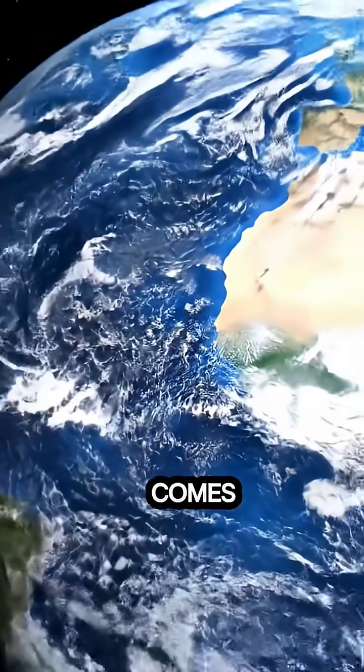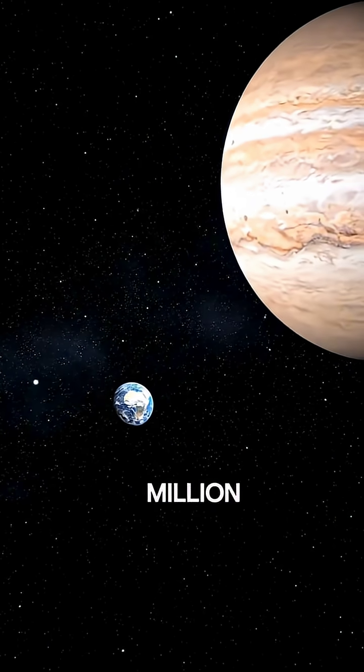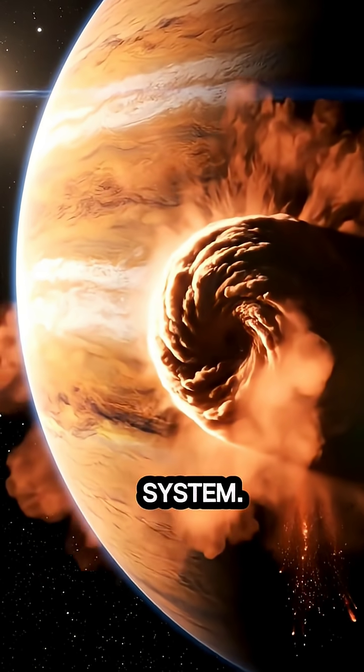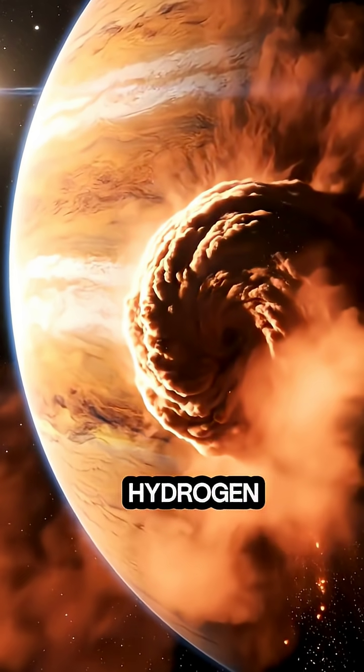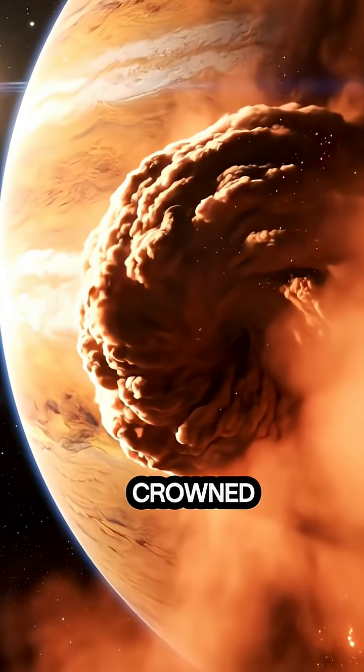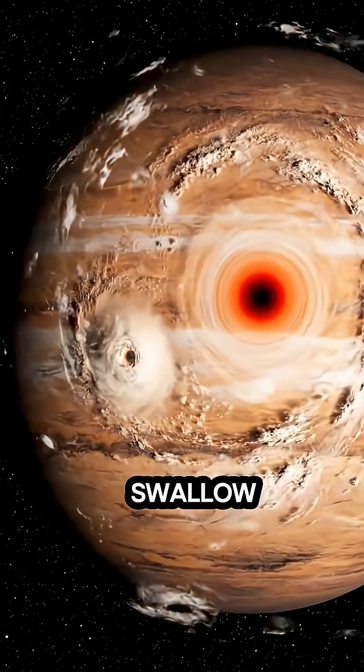Then comes Jupiter, about 628 million kilometers away. The largest planet in the solar system, made mostly of hydrogen and helium. It is a storm-filled giant crowned by the Great Red Spot, a hurricane large enough to swallow Earth.